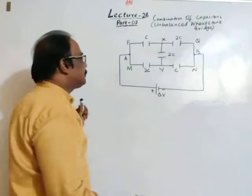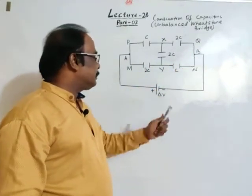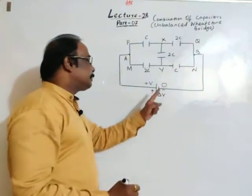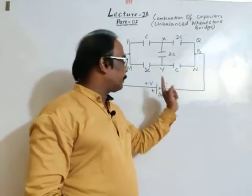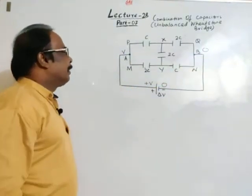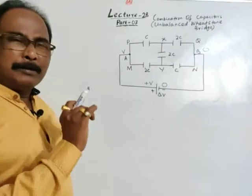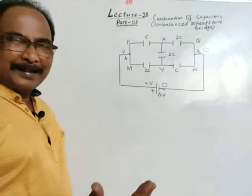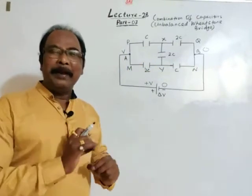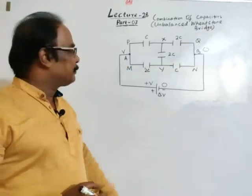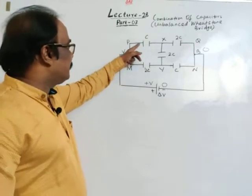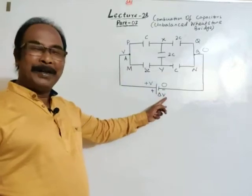We have to find equivalent capacitance. This point is A and this point is B, with potential difference delta V. Let potential of positive terminal be V and potential of the negative terminal be 0. So potential of A is V and potential of B is 0. Now let's see how the charge is distributed so that we can apply the law of conservation of charge. All plates of capacitors are initially neutral. When the circuit is complete, the plates connected to the positive terminal will become positively charged as electrons are removed.